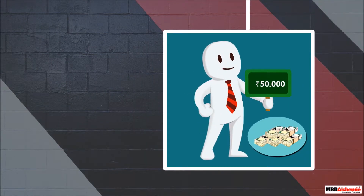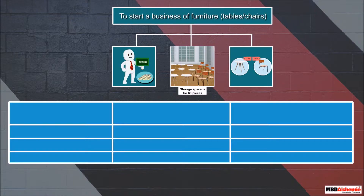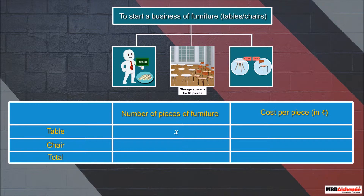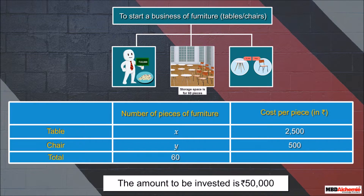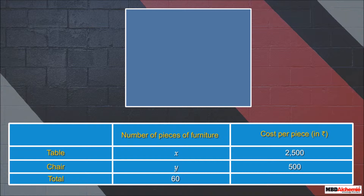Suppose the businessman wants to spend the whole amount of 50,000 rupees and wants to store 60 pieces of furniture. These statements can be represented as linear equations. For this, let us consider the number of tables as x and the number of chairs as y. The cost price of each table is 2,500 rupees and the cost price of each chair is 500 rupees. The total number of tables and chairs required is 60 and the amount to be invested is 50,000 rupees.